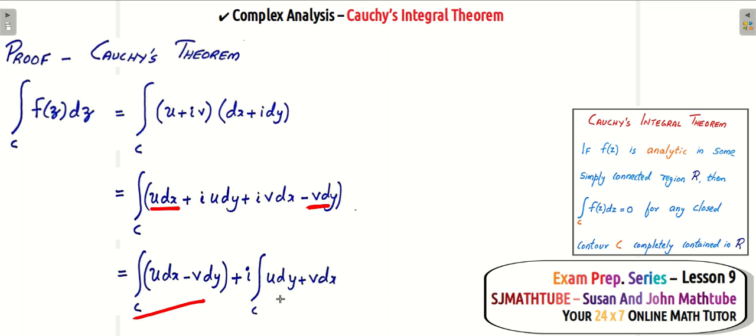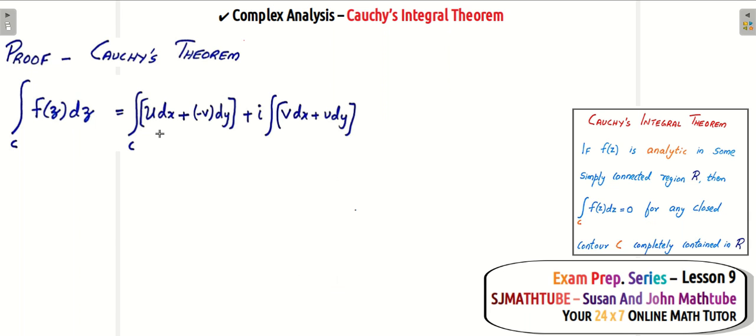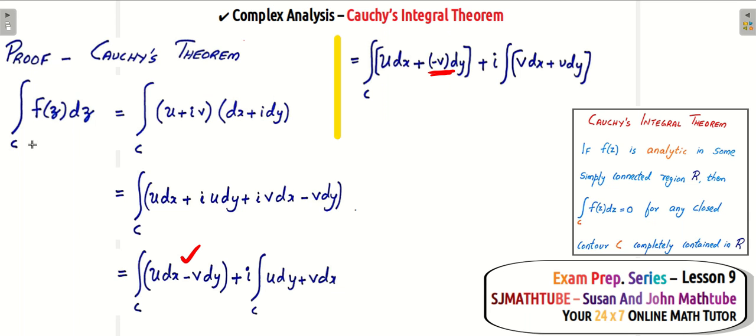So I kept u dx minus v dy inside the first integral and i times u dy plus v dx in the second integral. Now I'm planning to put a plus in between because I'm going to apply the version of Green's theorem with plus in between. So what I did is I put plus and I'm compensating it with minus v.